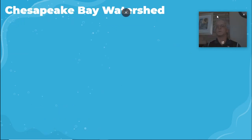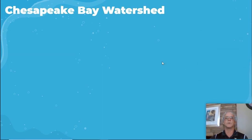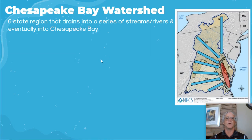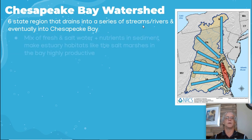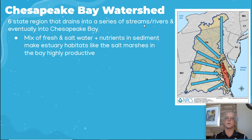One you definitely need to know about is the Chesapeake Bay watershed. The Chesapeake Bay has six states — everything from New York, Pennsylvania, Wisconsin, West Virginia, Delaware — all draining into the Chesapeake Bay. It's a mix of fresh water, salt water, and nutrients in the sediment, which makes the estuary habitats like salt marshes in the bay highly productive — one of the most highly productive biomes on the planet.